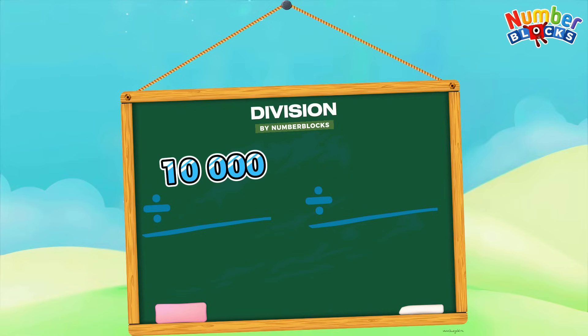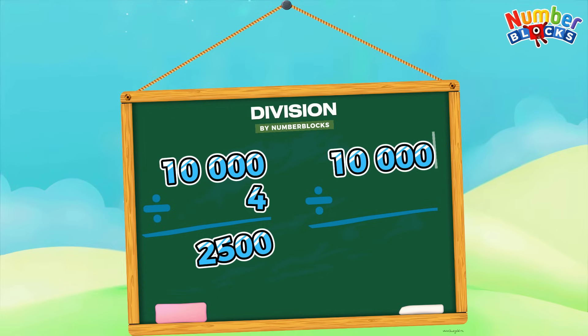10,000 divided by 4 is equals to 2,500. 10,000 divided by 2 is equals to 5,000.